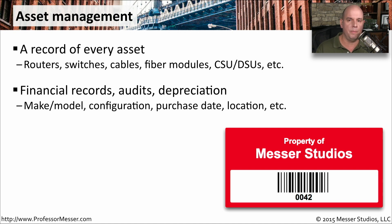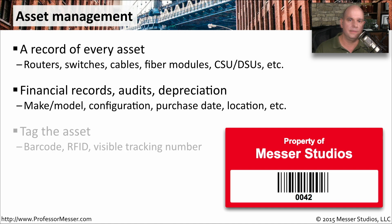You'll generally want to have the make and model of the device, configuration information about what's inside — such as what adapter cards you may have purchased — when and where it was purchased, where it's located, or anything else that might help you identify that particular asset. You would generally put a tag on the device to identify the asset. It might be a barcode or an RFID, so you can identify it through radio frequency waves. It's usually something visible so you can identify it with your human eye or by electronic means.